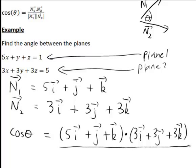This is divided by the magnitude of n1. Now how do we find the magnitude? That's the square root of the sum of squares of the components. So 5i, that'll be 5 squared, plus 1j, so 1 squared, plus 1k.